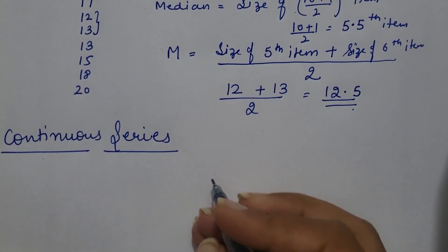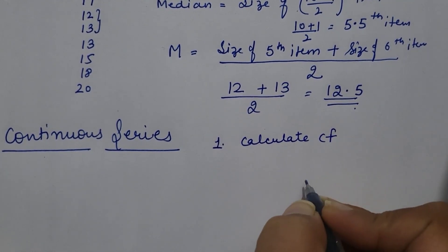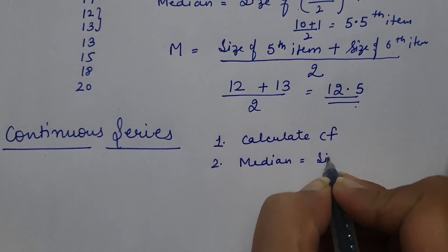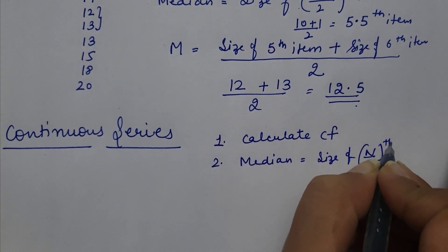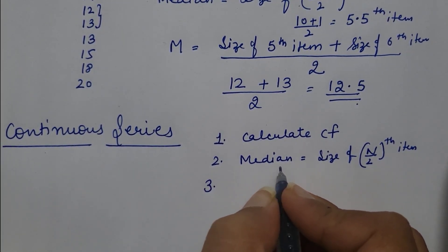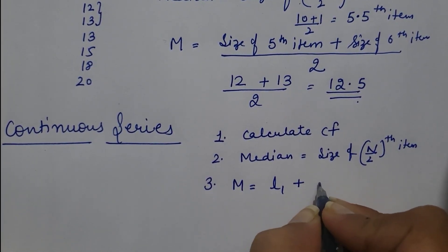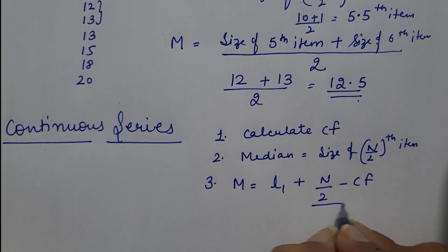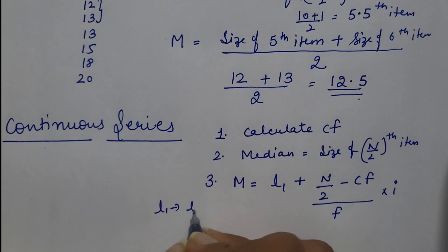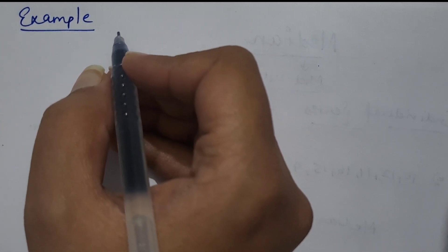Last is continuous series. To calculate median in continuous series, the first step is the same as in discrete series — we need to calculate cumulative frequency. After that, we apply the formula with a slight change: here we do not add 1, so it is size of N by 2th item. Third, after locating the class interval, we calculate median using the formula: L1 plus (N by 2 minus Cf) upon F multiplied by I. Here L1 refers to the lower limit of the median class.